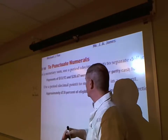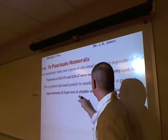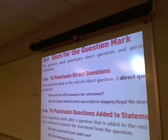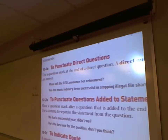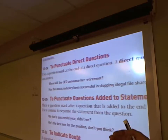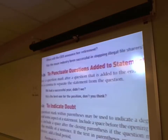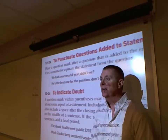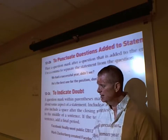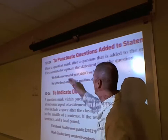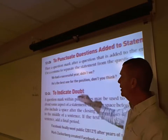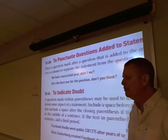Uses of the quotation mark: punctuate direct questions — 'When will the CEO announce her retirement?' — that's a real question, so use a question mark. For questions added to statements: 'We had a successful year, didn't we?' — there's the statement apart from the question. Use a comma to separate the questionable part, then put a question mark with the question being asked. 'He's the best one for the position, don't you think?' — same approach.